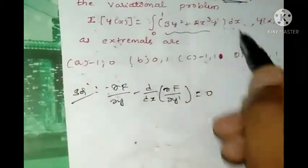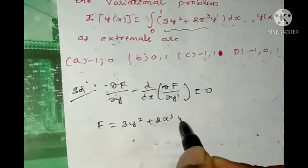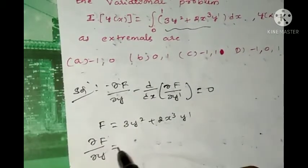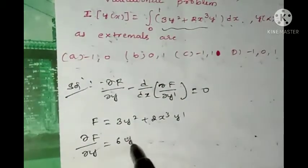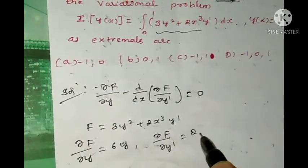This is the F: F = 3y² + 2x³y'. Then ∂F/∂y = 6y and ∂F/∂y' = 2x³.